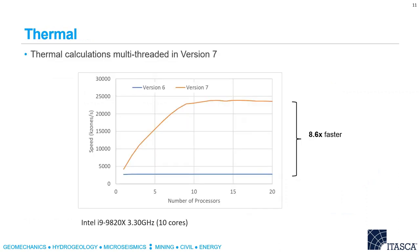For thermal calculations the speed up is even more dramatic, because before version 7 the thermal calculations were not multi-threaded at all. In version 6, if you look at the blue line, you could keep adding processors and the thermal calculation did not speed up. In version 7 it is multi-threaded, so we can get very significant speed ups in the thermal calculation.